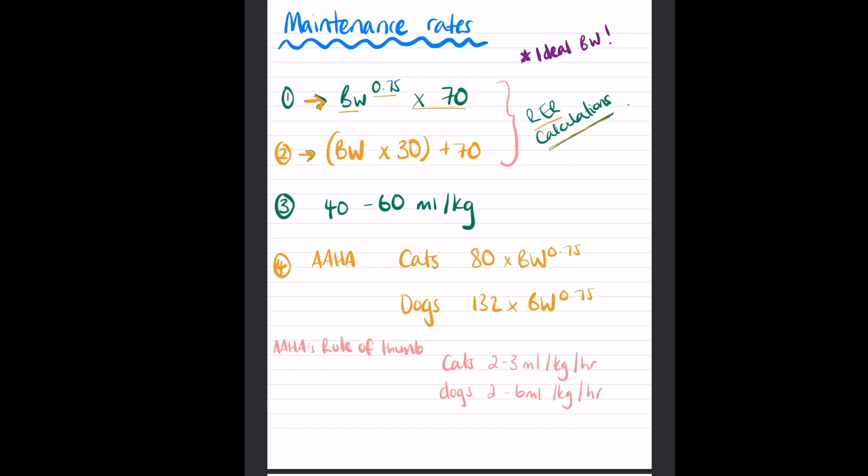This one is very similar. Number one is what we call an exponential equation, and number two here is a slightly simpler version of that, slightly less scientific. It's body weight times 30, and then you would equal that and then plus 70.